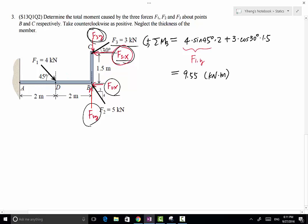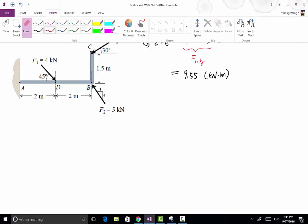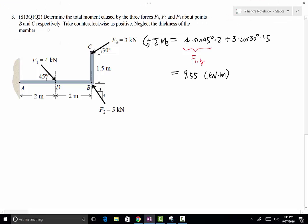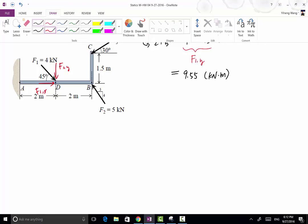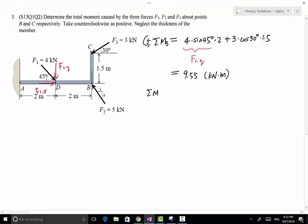Now we move on to point C. Still trying to determine the resultant moment caused by these three forces about point C. F1 has a component F1Y and F1X, and both of them have moment about point C. Resultant moment about point C, again counterclockwise is positive.